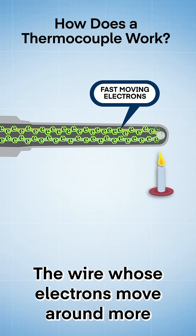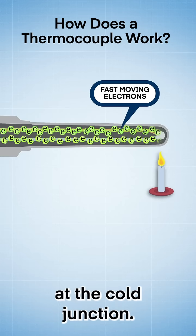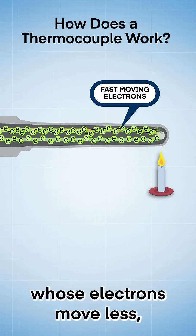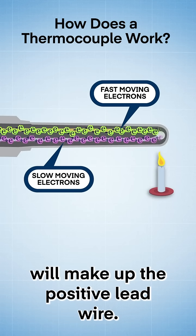The wire whose electrons move around more will have a negative charge at the cold junction, while the wire whose electrons move less will make up the positive lead wire.